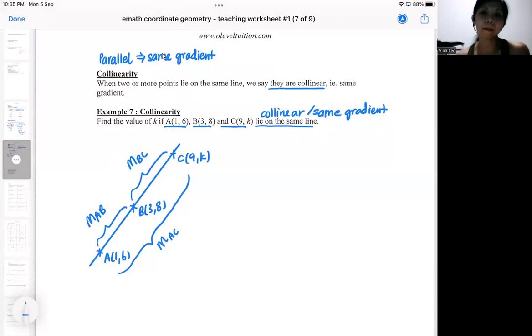Because of this concept, you choose any of the two, choose from the three gradients, you just need to choose any two that you like, and then you try to equate the two gradients. The three gradients are the same. The gradient AB should be the same as gradient BC should be equal to gradient AC.